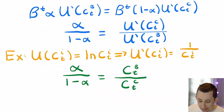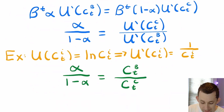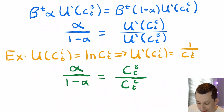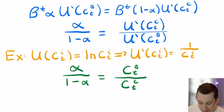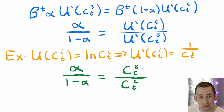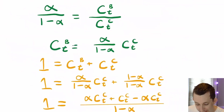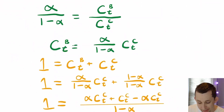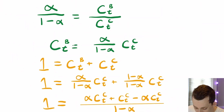To make it more concrete, I'm going to use the natural log of consumption as the utility function for both of them, which means their marginal utility is just one over c_t^i. Flipping those, I get alpha over one minus alpha equals c_t^B over c_t^C. I'll plug that back into the feasibility constraint, solving for Bill's consumption in period t in terms of Chuckles' consumption in period t, and then substitute into the budget constraint.